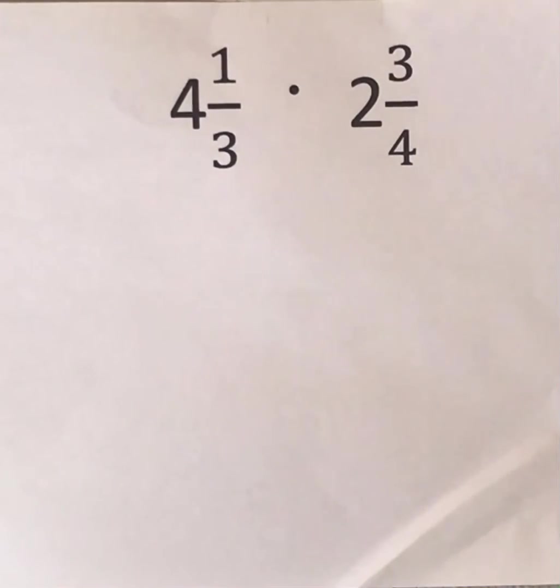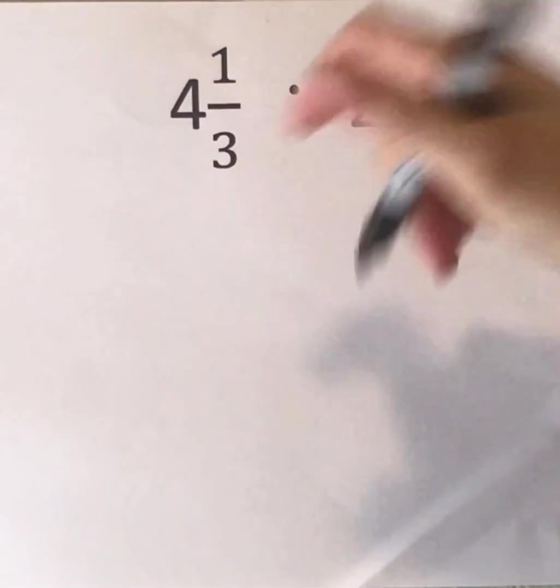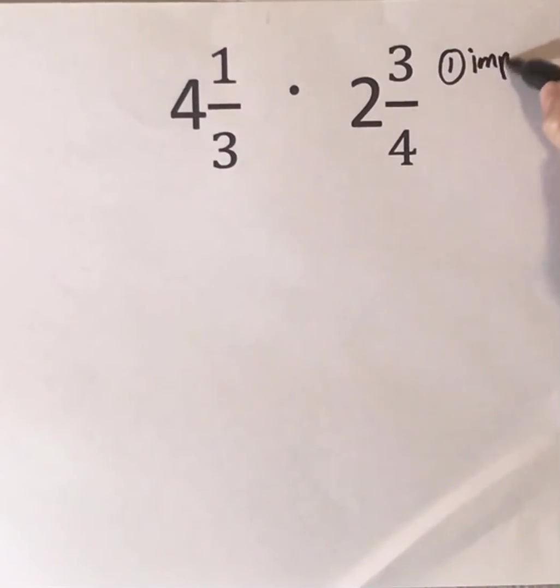Alright, we're going to multiply mixed numbers. So to multiply mixed numbers, your first step is to change these mixed numbers into improper fractions. That's your first step.